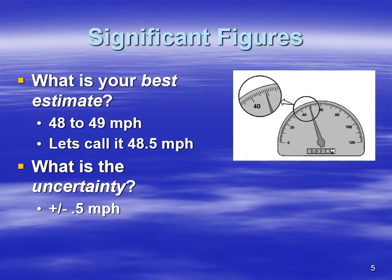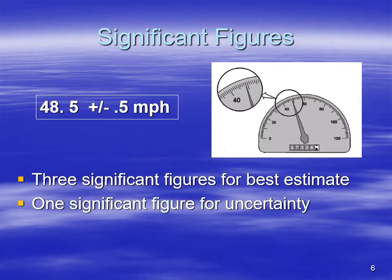We'll say that our uncertainty is about half a mile per hour because we know it's falling somewhere in that range between 48 and 49. When we state our value — the value of the physical quantity — we would say that our speed has a value of 48.5 miles per hour with uncertainty of 0.5 miles per hour. Looking at this, we've got three significant figures: 48.5. That last figure, 0.5, is the one we have uncertainty in — one significant figure for uncertainty. Whenever we state uncertainty, we only use one figure — plus or minus 0.5, not plus or minus 0.52368.